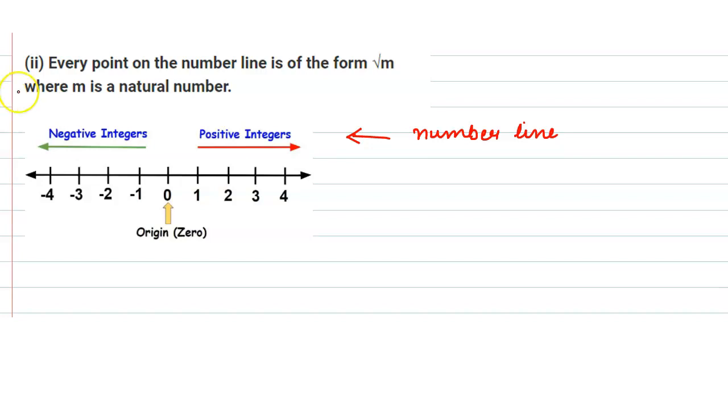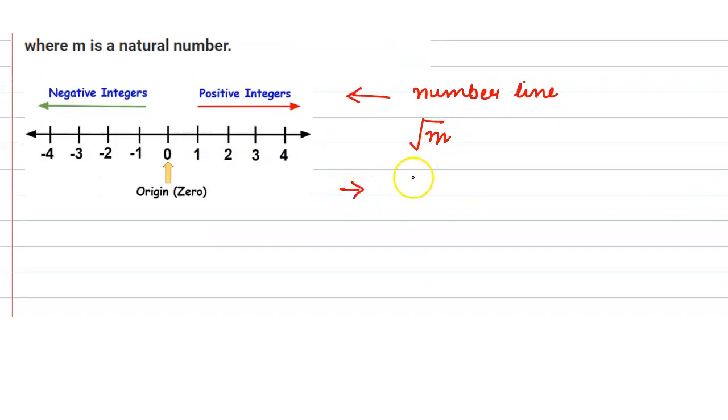Now they are saying that every number on the number line or every point on the number line is of form root m. Let us see if we take root 4 which comes out to be 2. So this is a natural number.